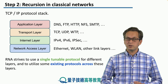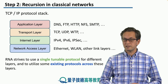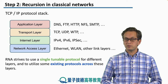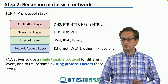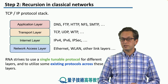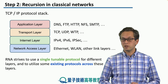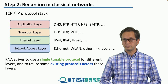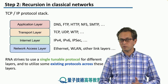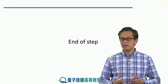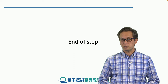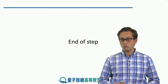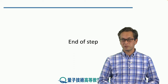The recursive network architecture in classical networks strives to use a single but tunable protocol for different layers, and to utilize some of the existing protocols for communication across the different layers. We're going to take this basic idea and try to apply it to quantum network architecture as well — we'll see how in the following steps.